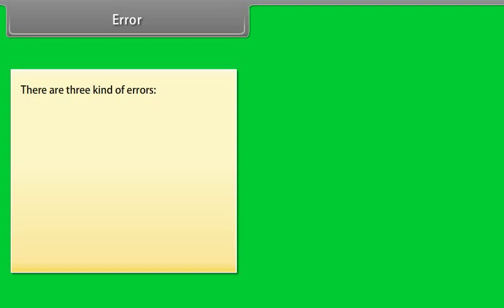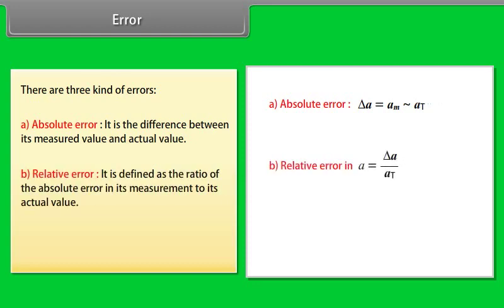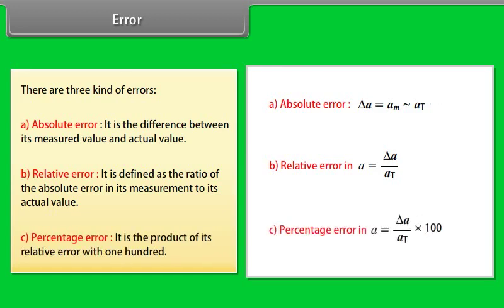Precision tells us to what resolution or limit the quantity is measured. There are three kinds of errors. Number one, absolute error, it is the difference between its measured value and actual value. Number two, relative error, it is defined as the ratio of the absolute error in its measurement to its actual value. Number three, percentage error, it is the product of its relative error with 100.